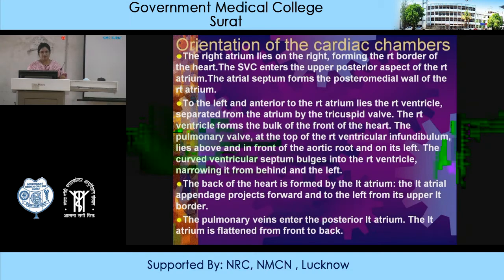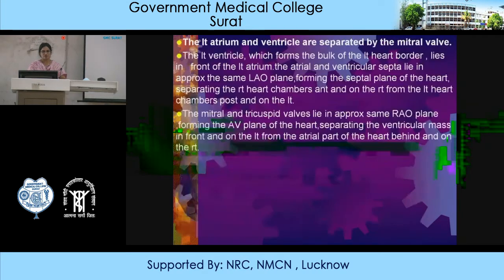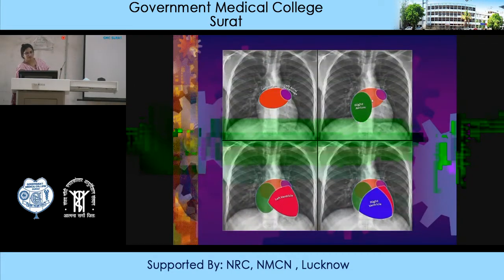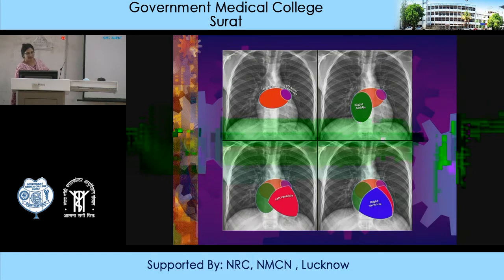You can see the orientation of the right atrium here. It forms the right border of the heart, and anterior to the right atrium and on the left side is the right ventricle. It is a triangular shaped structure and the atrioventricular septum, that is the tricuspid valve, lies at this level.